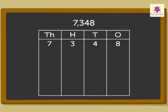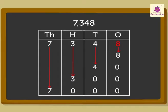The place value of digit 7 is 7000. The place value of digit 3 is 300. The place value of digit 4 is 40, and the place value of digit 8 is 8.